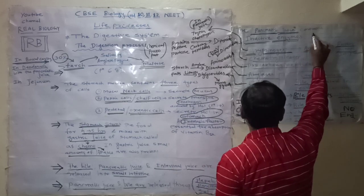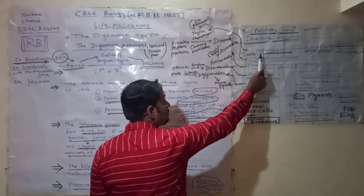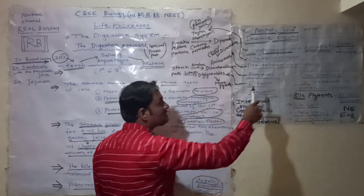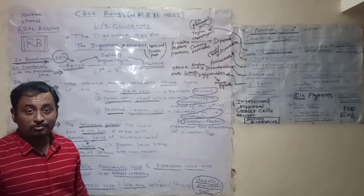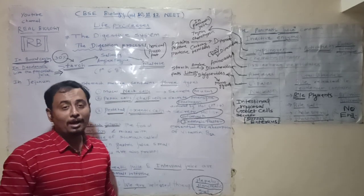Then, the pancreatic juice, what does it contain? It contains inactive enzymes. These inactive enzymes are trypsinogen, chymotrypsinogen, procarboxypeptidases, which are a kind of proteases which digest protein into dipeptides and later into amino acids.